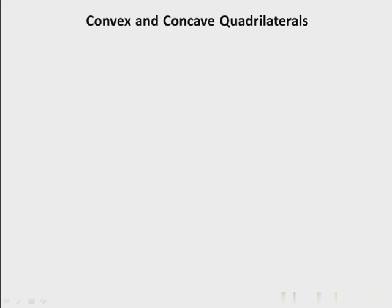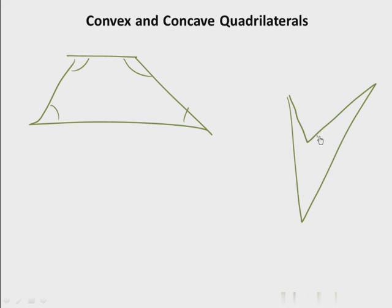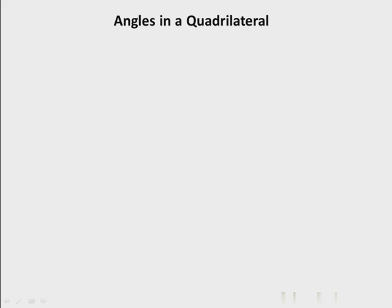Let's start with quadrilaterals — convex and concave quadrilaterals. Most of the quadrilaterals we study are convex. If you take a typical quadrilateral, all its angles are less than 180 degrees. A convex figure is one in which every interior angle is less than 180 degrees, and a concave figure is one in which at least one interior angle is more than 180 degrees. This changes the shape — in the concave case there is an inward-pointing vertex, while in the convex case all vertices are outward-pointing.